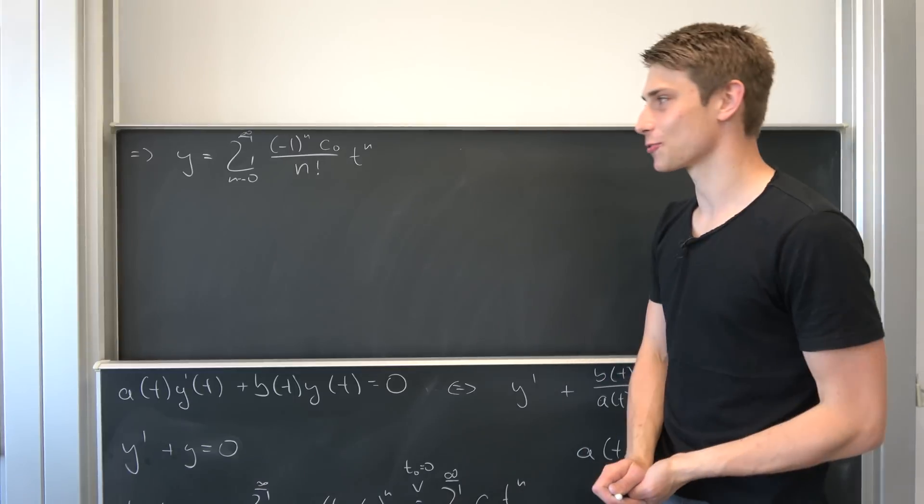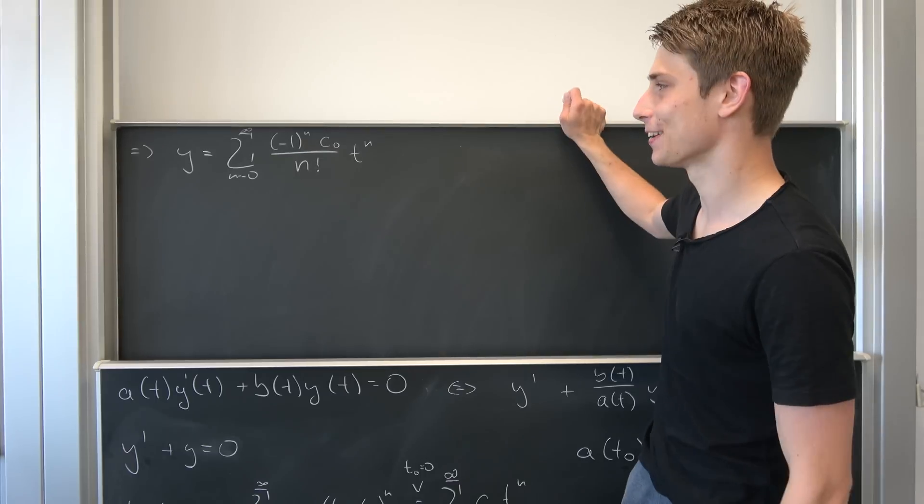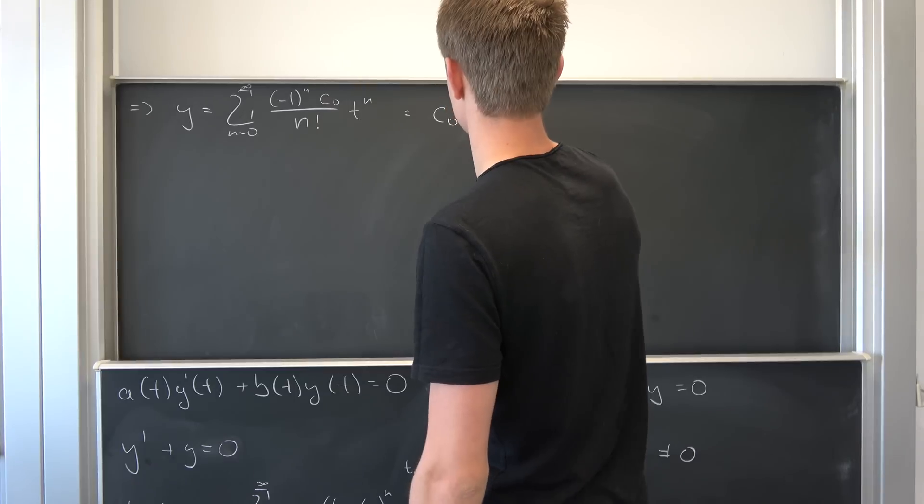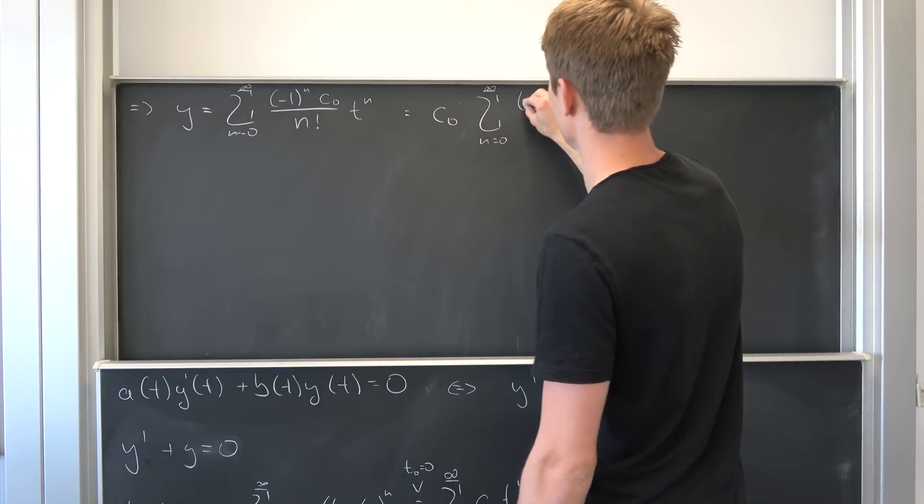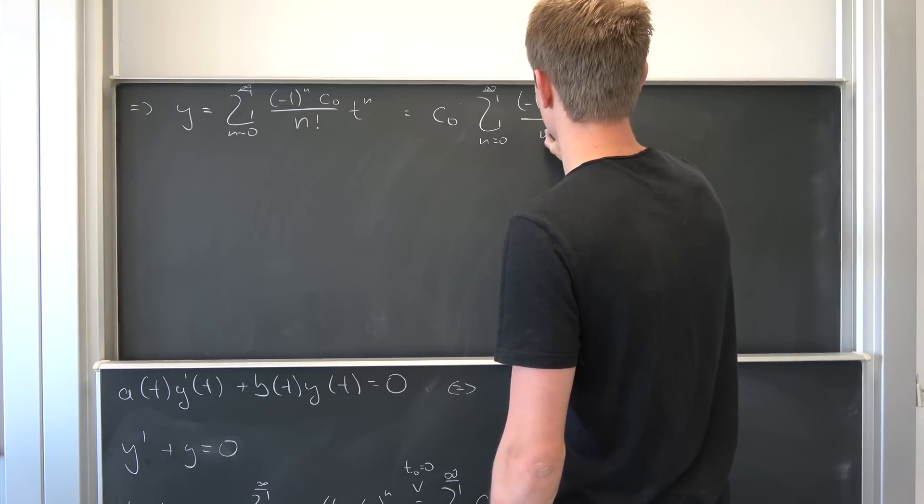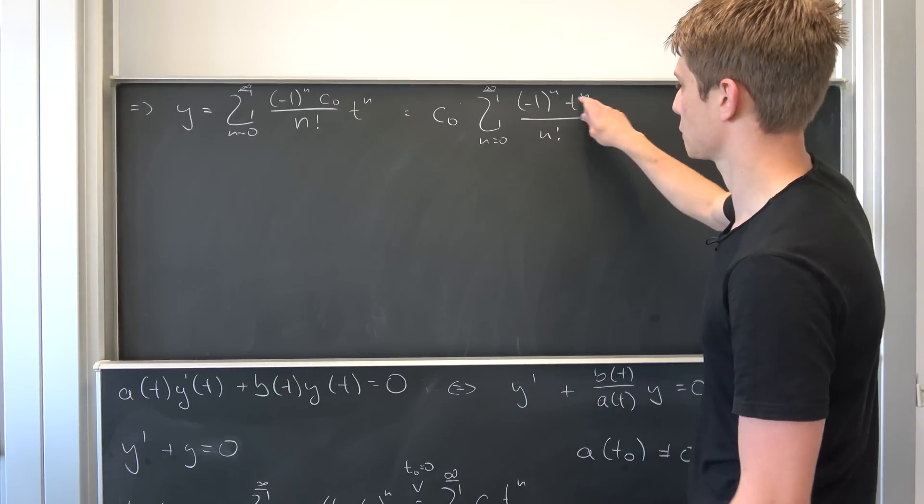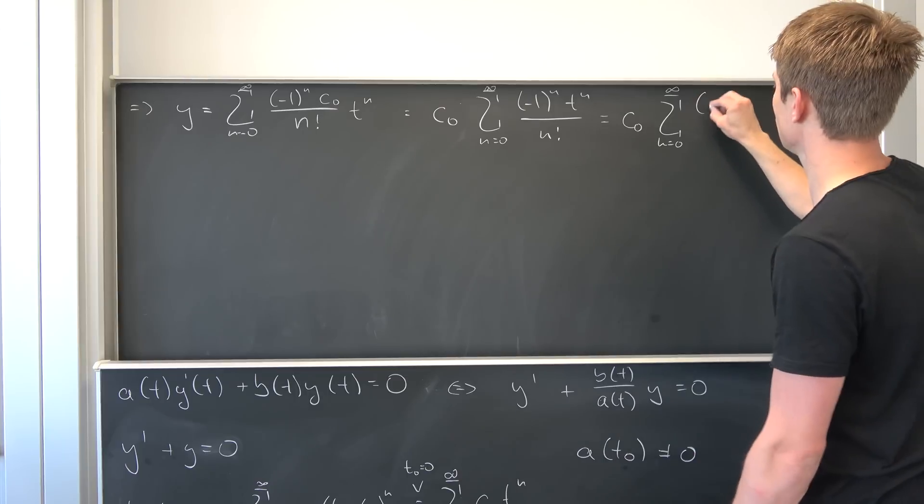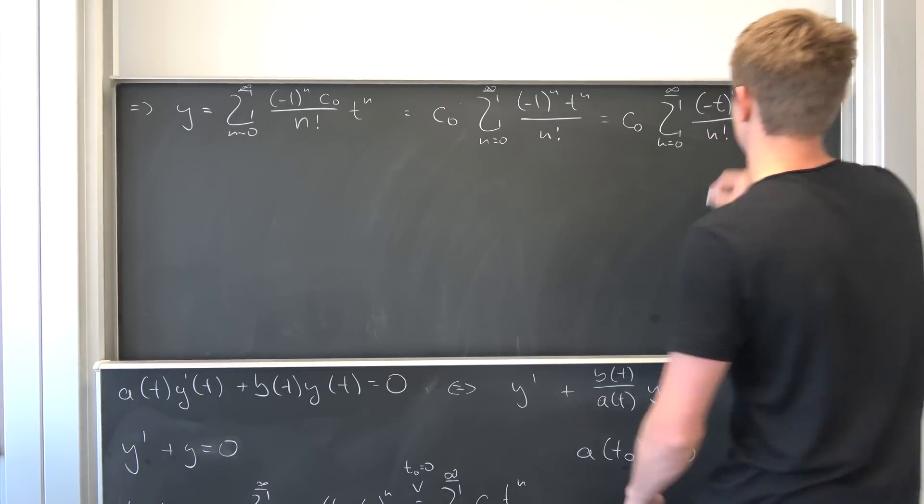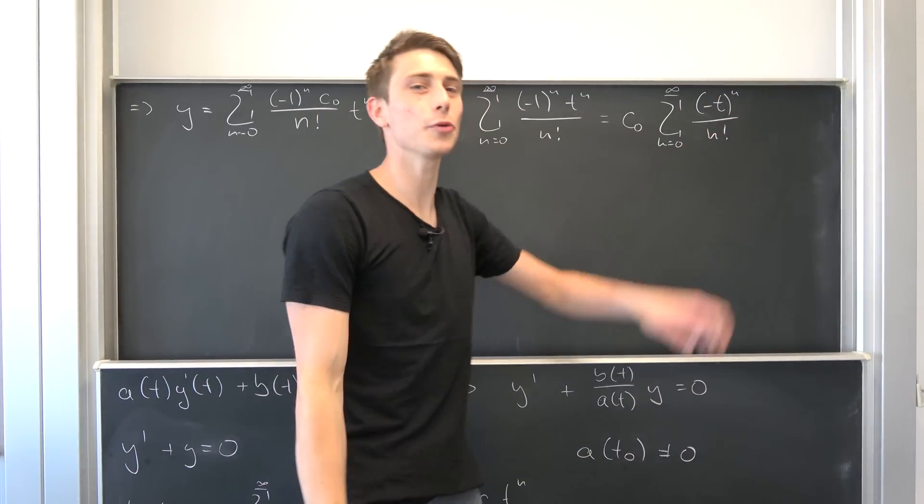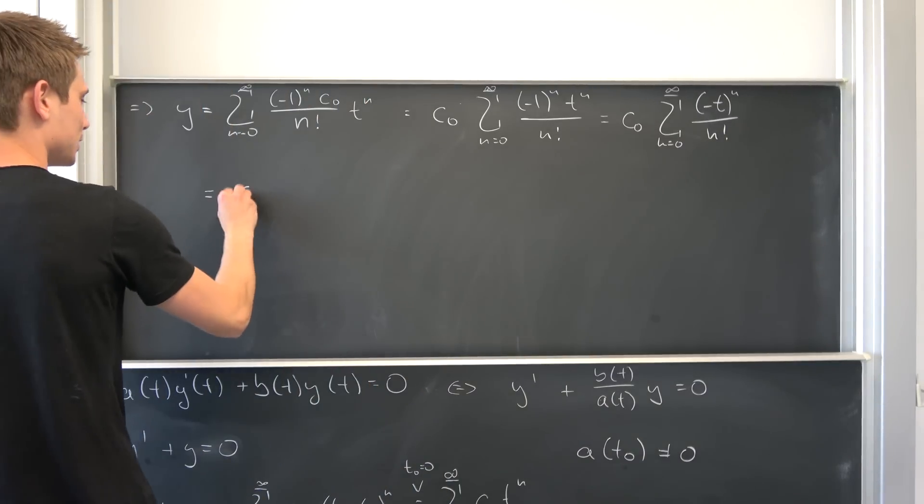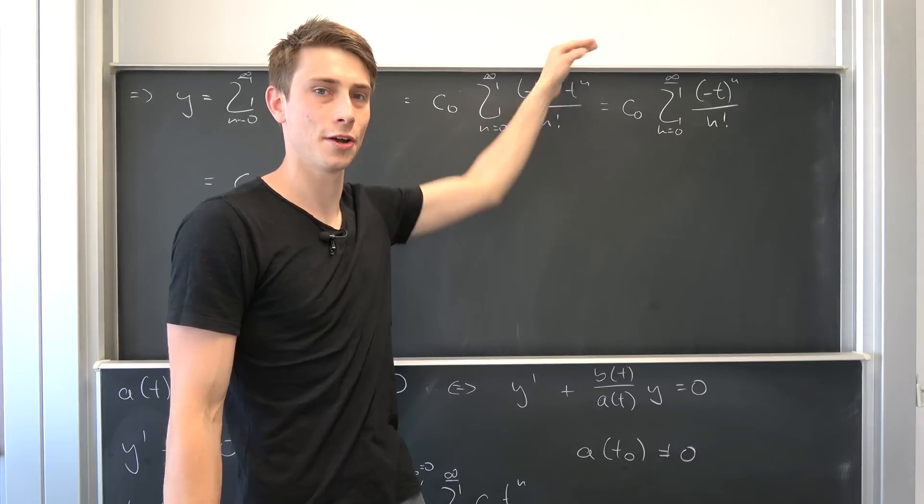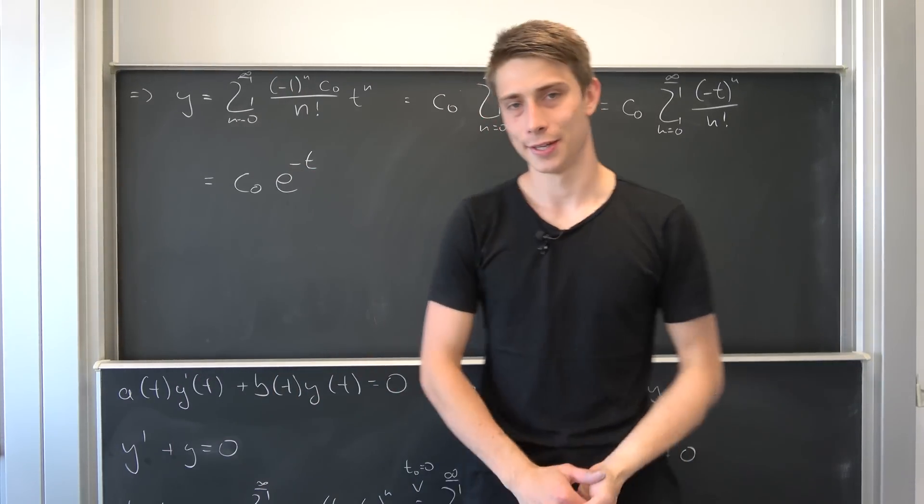Now we're basically done. So most of the work is done. And that's quite cool because we can bring those c0 to the outside, they're just constants. So we end up with c0 times the sum going from n equals 0 to infinity of minus 1 to the nth power, t to the nth power over n factorial. They have the same exponent, so let's bring them together. So now we have c0 times the sum from n equals 0 to infinity of minus t to the nth power over n factorial. But this boy right here—that's exactly c0 times e to the minus t. This is the Taylor series representation for our exponential to the minus t power.